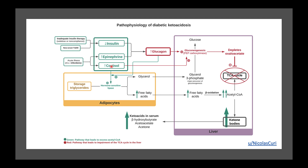Epinephrine, cortisol, and glucagon are upregulated. When these hormones get upregulated, they activate hormone-sensitive lipase at the level of the adipocyte. So counter-regulatory hormones upregulate hormone-sensitive lipase. What happens now? The triacylglyceride breaks down into glycerol and free fatty acids. Let's take each one of these individually.